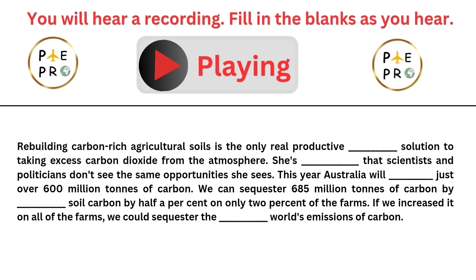Rebuilding carbon-rich agricultural soils is the only real productive permanent solution to taking excess carbon dioxide from the atmosphere. She's frustrated that scientists and politicians don't see the same opportunities she sees. This year Australia will emit just over 600 million tons of carbon. We can sequester 685 million tons of carbon by increasing soil carbon by half a percent on only 2% of farms. If we increased it on all of the farms, we could sequester the whole world's emissions of carbon.